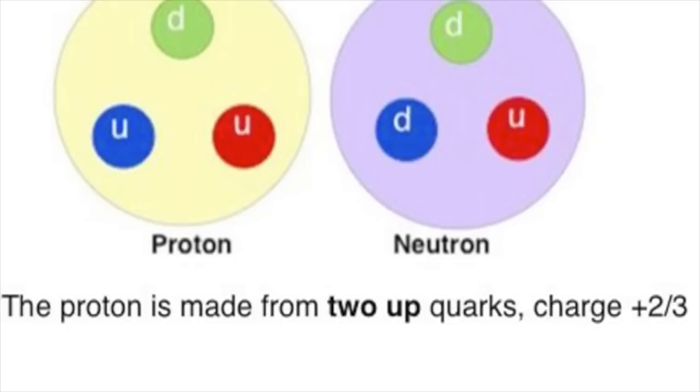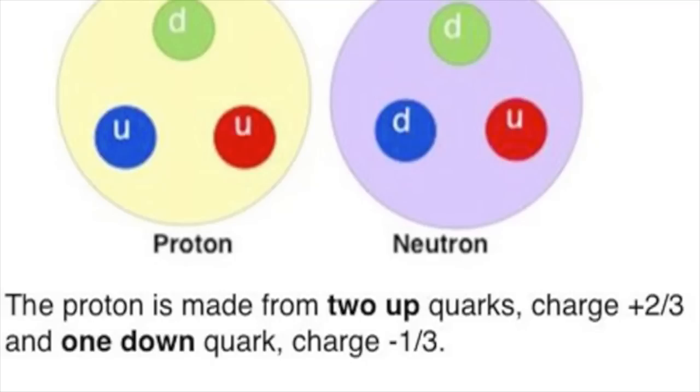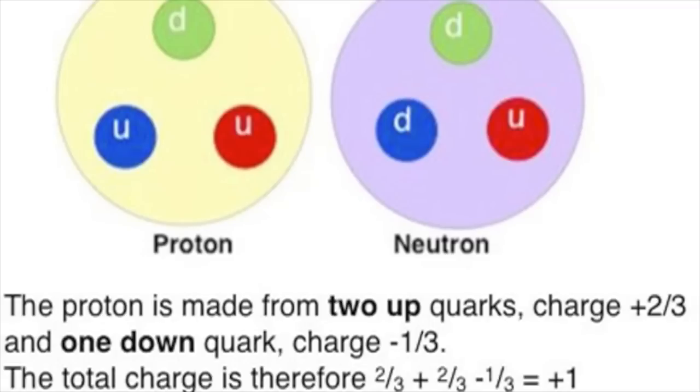The charges on these quarks comprise the total charge on each of the nucleons. For instance, a proton is made from two up quarks charged two thirds and one down quark charged minus a third. The total charge is therefore one.